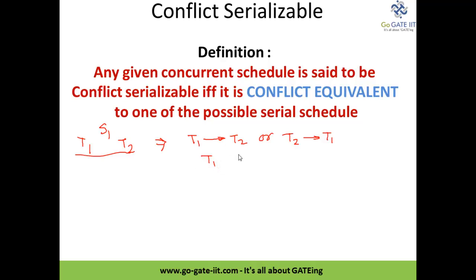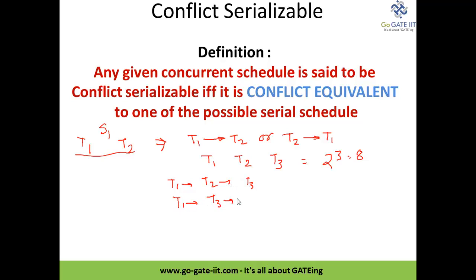In case of three transactions — T1, T2, T3 — we will have 2 raised to 3, that is 8, possible serial schedules. So T1 will execute then T2 then T3, then T1 T3 T2, and likewise we will get a total of 8 possible serial schedules.